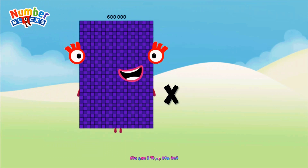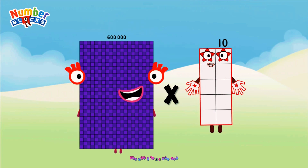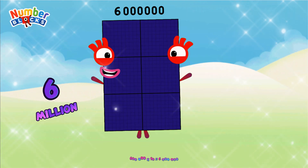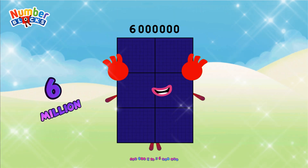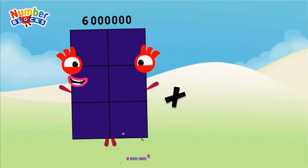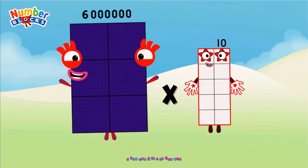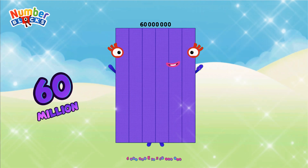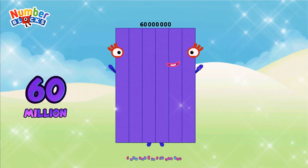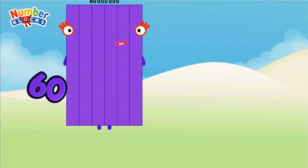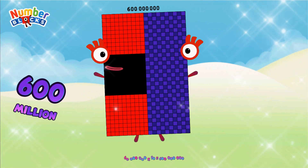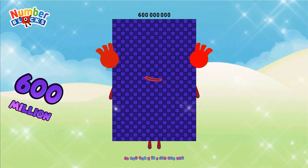600,000 × 10 = 6,000,000. 6,000,000 × 10 = 60,000,000. 60,000,000 × 10 = 600,000,000.